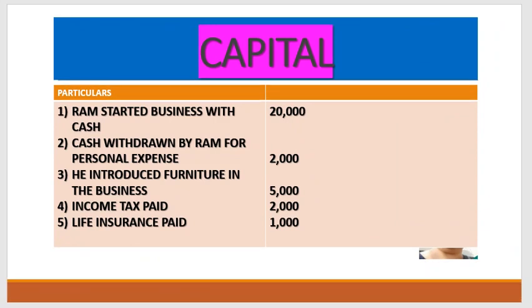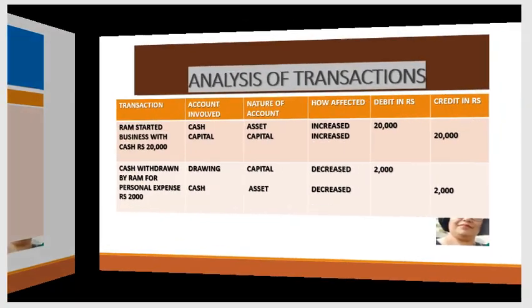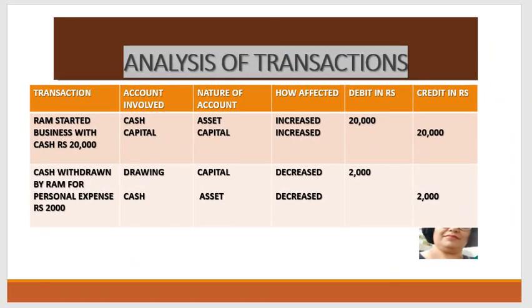Ram has started a business and introduced ₹20,000 in cash. Cash withdrawn by Ram for personal expenses ₹2,000. He introduced furniture in the business worth ₹5,000. Income tax paid ₹2,000. Life insurance paid ₹1,000. So here we have to see that when we deal with capital or drawing — which thing comes when capital comes into the business — it can come in cash or in kind. So we have to apply debit and credit rules accordingly.